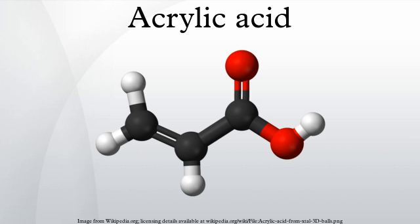Substituents: As a substituent, acrylic acid can be found as an acyl group or a carboxyalkyl group depending on the removal of the group from the molecule. More specifically, these are the acrylol group, with the removal of the OH from carbon 1, and the 2-carboxyethyl group, with the removal of OH from carbon 3. This substituent group is found in chlorophyll.